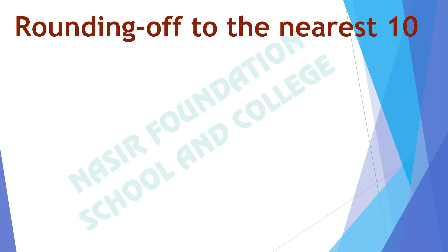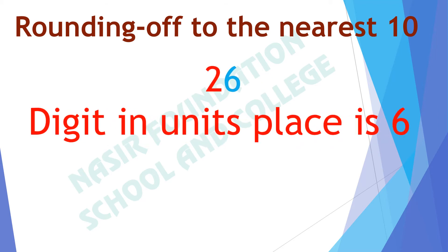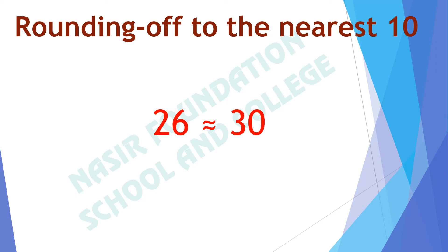Rounding off numbers to the nearest 10 — example: 26. As 26 is between 20 and 30, the digit in its unit place is 6. Since 6 is greater than 5, we round it off to the nearest 10. Drawing the number line from 20 to 30, we see that 26 is nearer to 30. Therefore, 26 is nearly equal to 30.